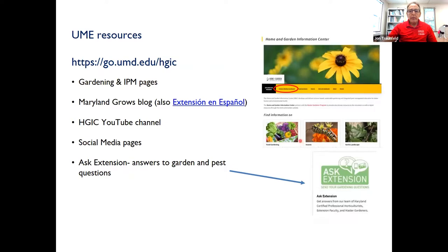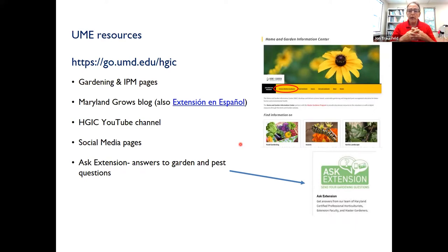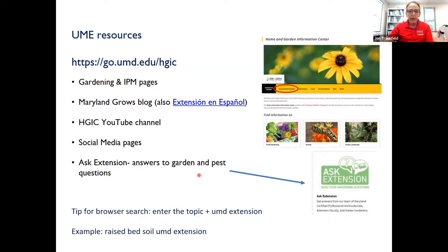Just a reminder that UME has some very good gardening resources on all topics. We cover vegetables and fruits. In addition to the web pages, we've got a really great blog — Maryland Grows — and I'd encourage you to check it out. There's also a Spanish language blog from two of our professors on campus. We have lots of videos, social media, and of course, Ask Extension. You can submit questions 24/7 and include up to three photos. I'd really encourage folks to take advantage of that. If you're a master gardener, please share that with your clientele.